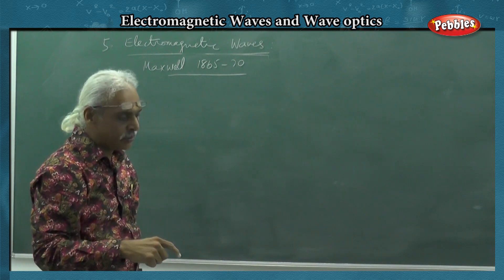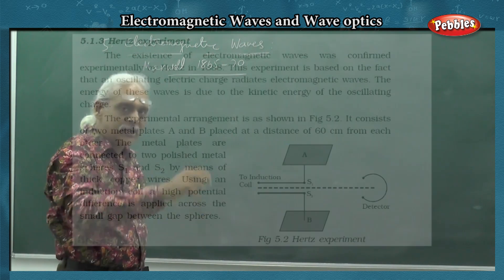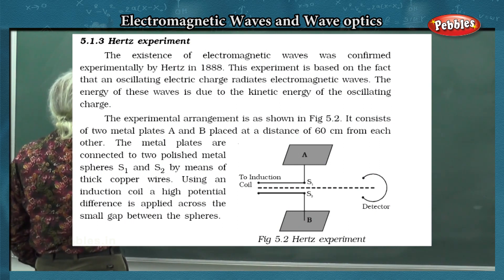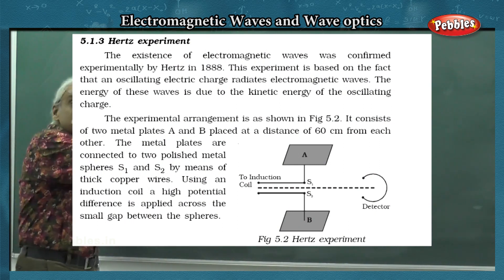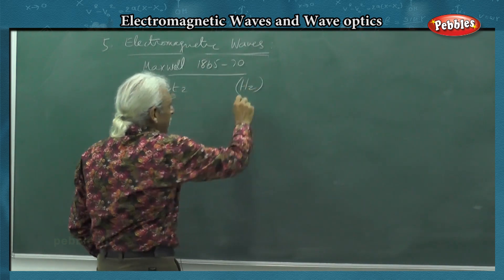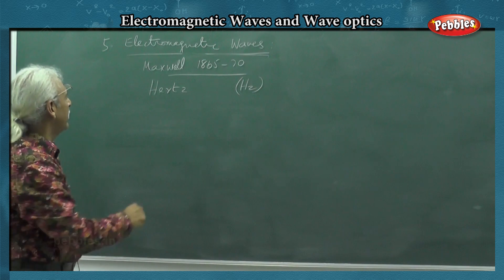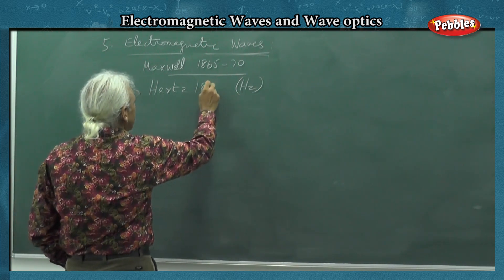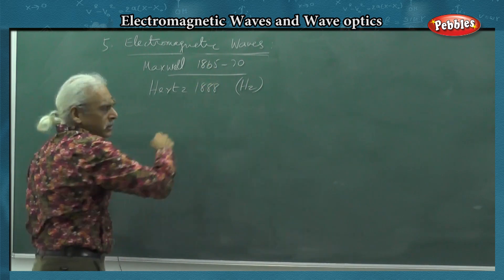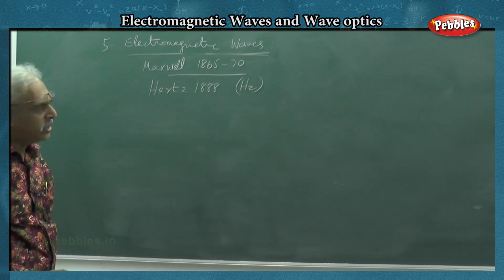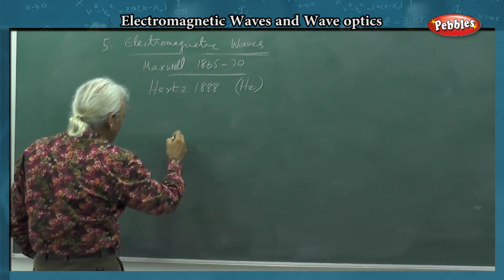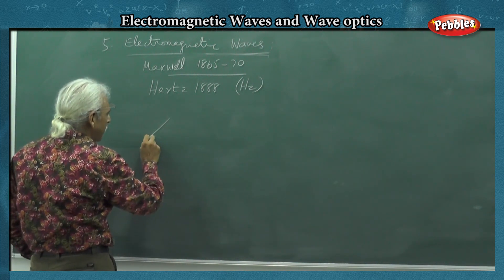Who can prove that light is an electromagnetic wave? The German scientist Hertz - whose name is also the unit of frequency - proved this. It's not easy, but it's a relatively simple experiment. He took up two metal plates.